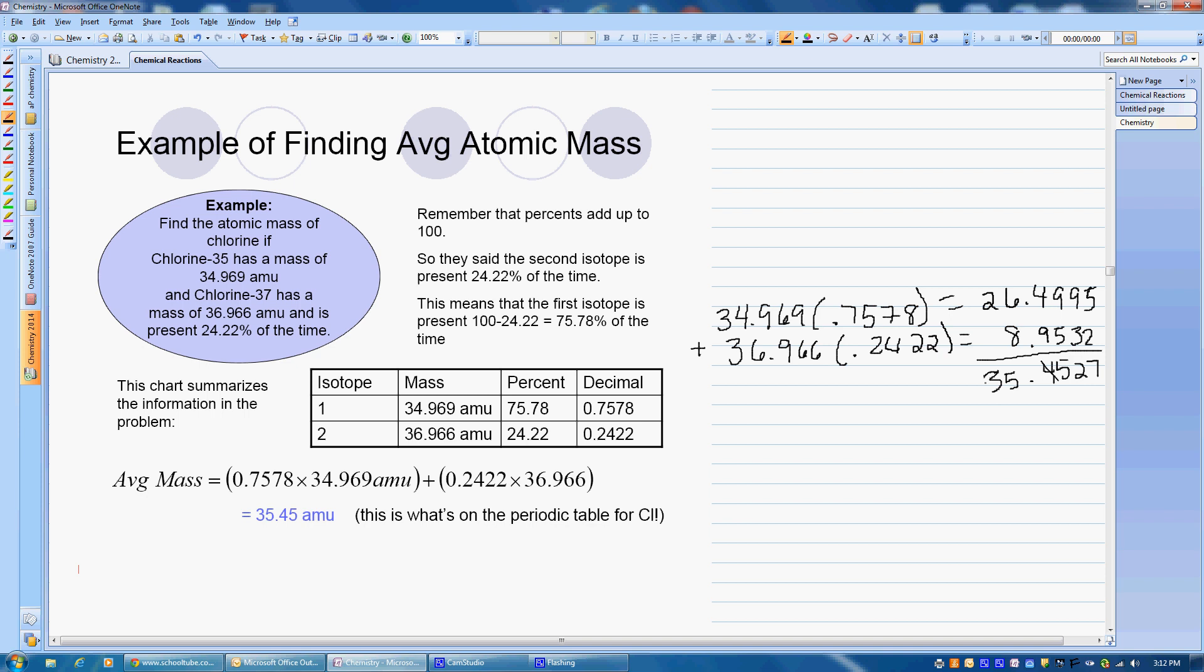Okay, so we need to now look at this and make sure it makes sense. So if we have one isotope that weighs 34.9, and the other isotope weighs 36.9, we know that the average, the weighted average, has to fall between these two numbers somewhere. So here it's 35.45, that makes sense because it falls in there. And then I could ask you the question, which do we have more of?